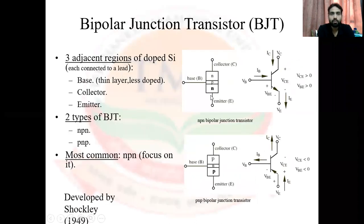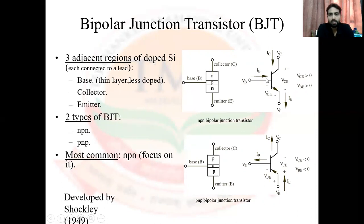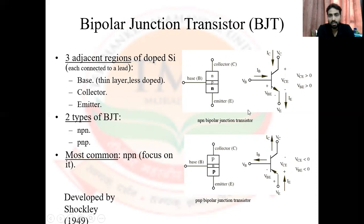Let's look at the transistor symbols. For NPN, the arrow on the emitter indicates the direction of current flow. Since in NPN the emitter has electrons moving from emitter to collector, the conventional current flows opposite — from collector to emitter. That's why the arrow in the NPN symbol points from collector toward emitter (outward arrow on emitter).